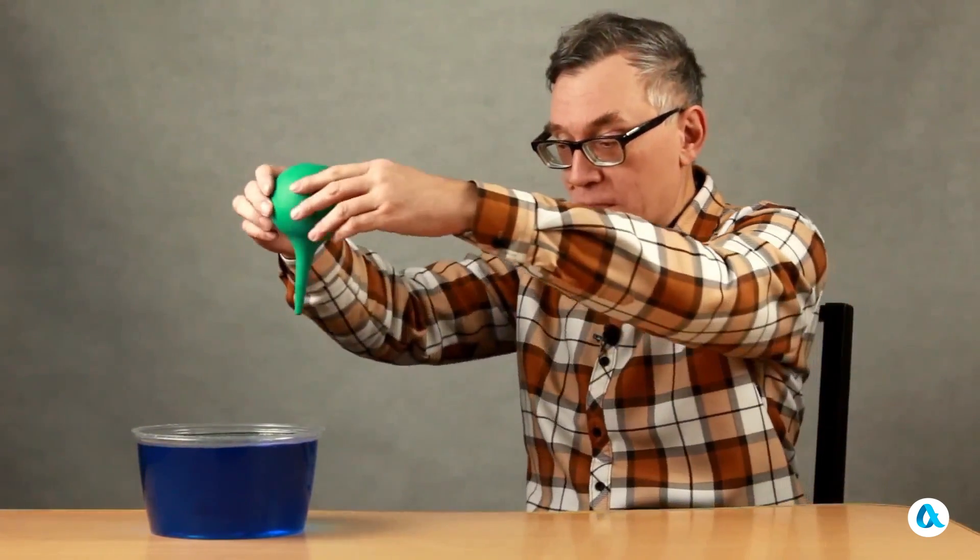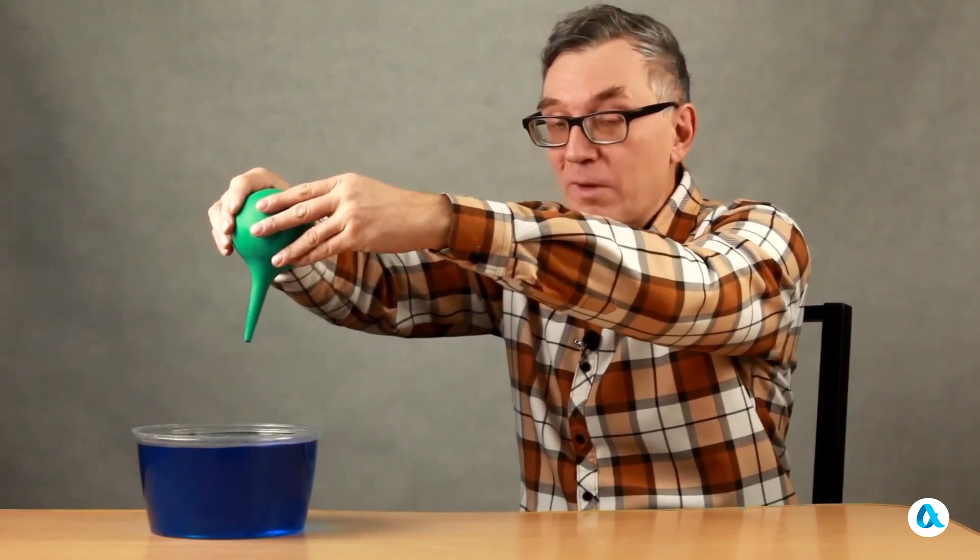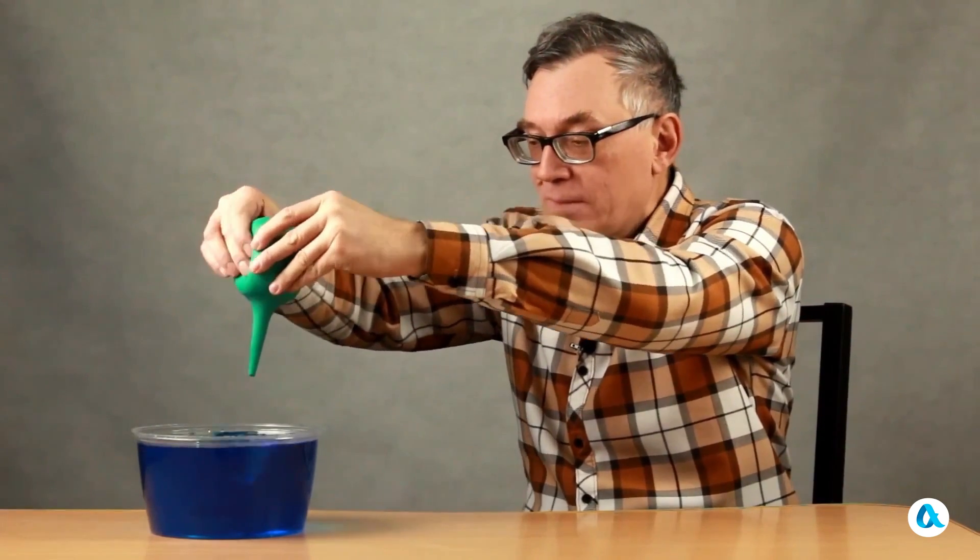And now we will proceed to the next round of experiments. For the initial one I will take this rubber pear and blow on the surface of the water quite sharply. And out of the water quite high jets emerge.